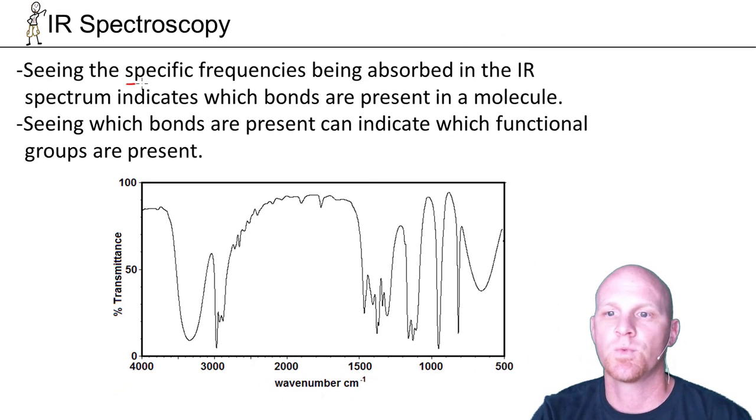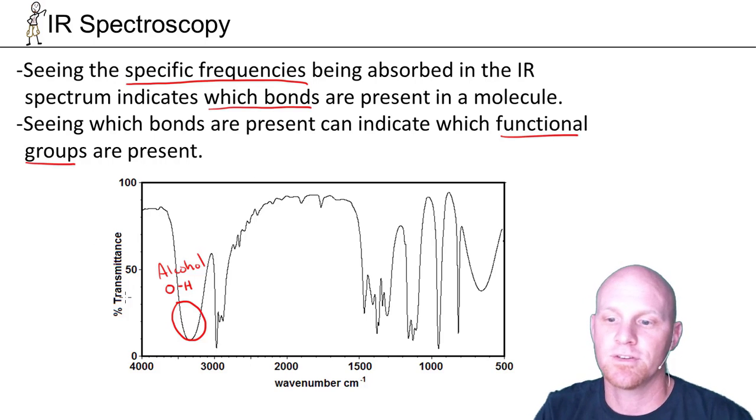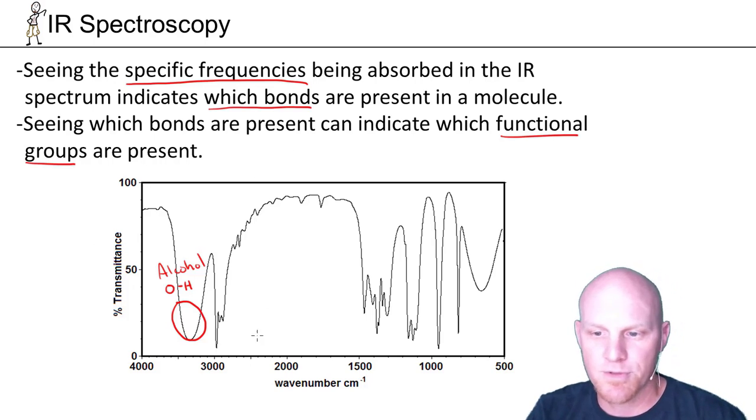If we look in the infrared spectrum and see which specific frequencies are being absorbed, this will indicate which bonds are present in the molecule. For example, this guy right here is the indication that we have an OH bond. This one is peculiar to an alcohol OH. The bond also gives us which functional group is present as well. An example of how we can identify the presence of certain bonds based on the frequencies of infrared light being absorbed, and then also identify functional groups that correspond to those bonds.